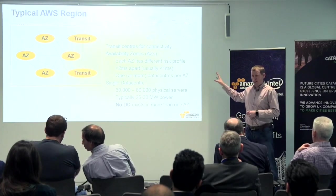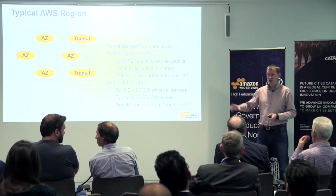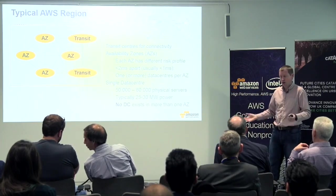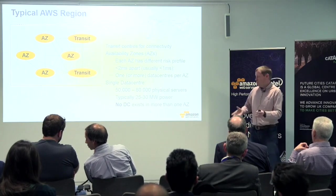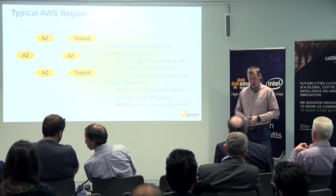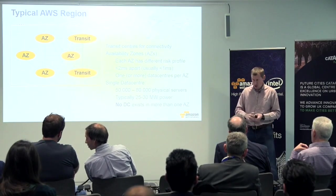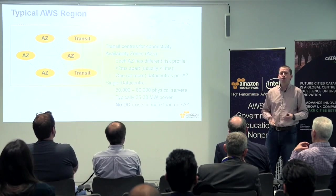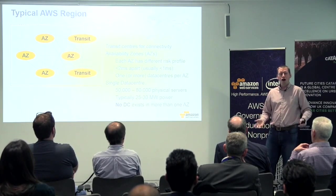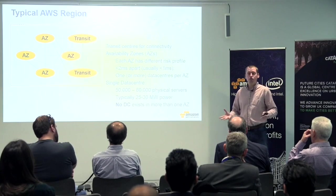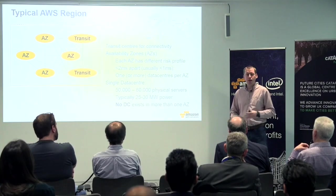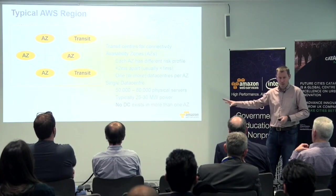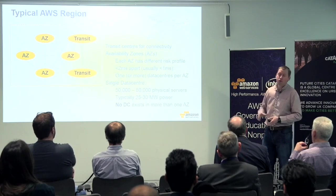We've looked at bigger data centres. People sometimes ask why aren't your data centres a quarter of a million servers in size? We've got a long track record of experience in this, and what we found is that bigger data centres have a bigger blast radius. If you have a data centre outage when you've got a quarter of a million servers, that becomes much more difficult to handle than when you have a smaller number. So that's the optimal size we found.